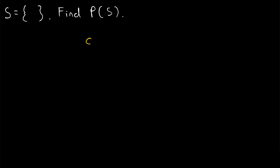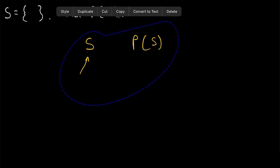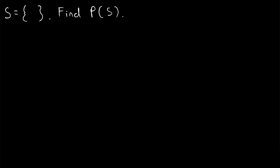Put simply, given a set S, the power set of S, denoted P of S, is the set containing all subsets of S. We're going to find four of them in this lesson. I encourage you, for practice, to try to find each one yourself before we go through the solution.